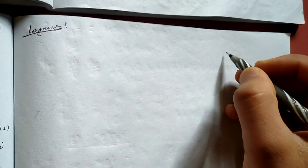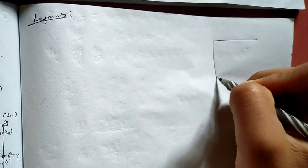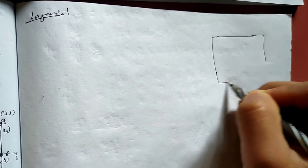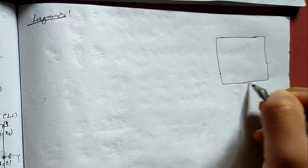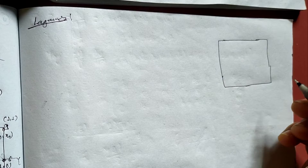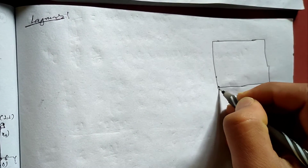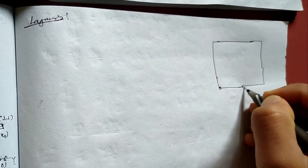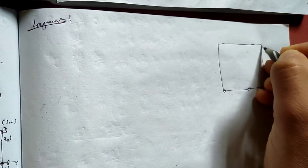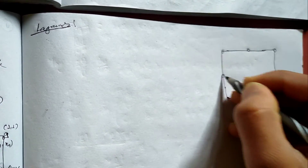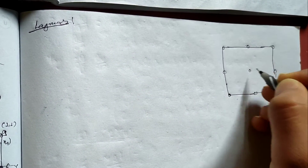Now we are going to have a square or rectangular shape function by using Lagrange polynomial function. We are going to have one, two, three, four, five, six, seven, eight, and this one is nine — a nine-noded rectangular element.